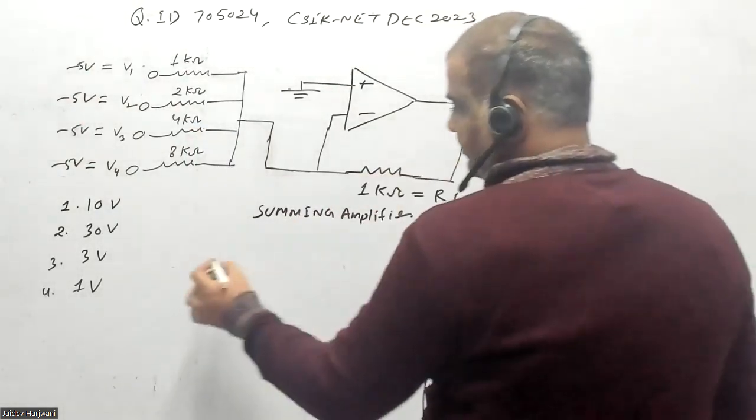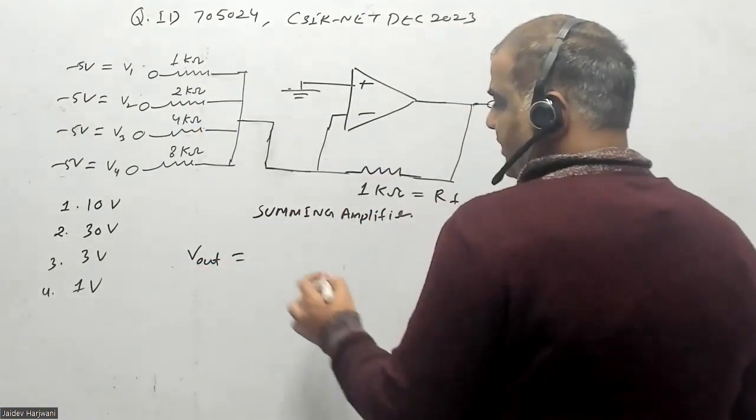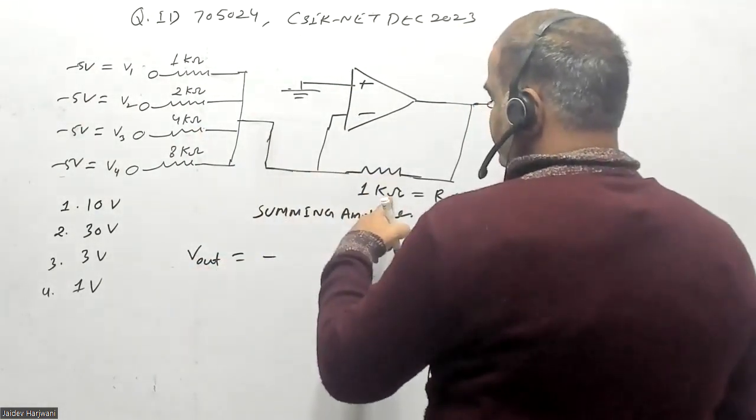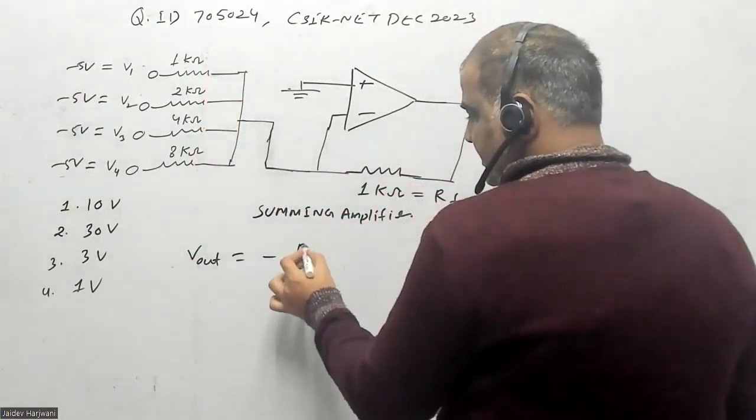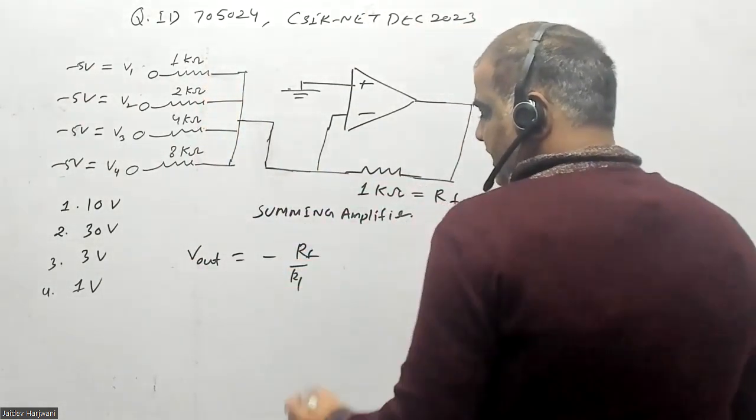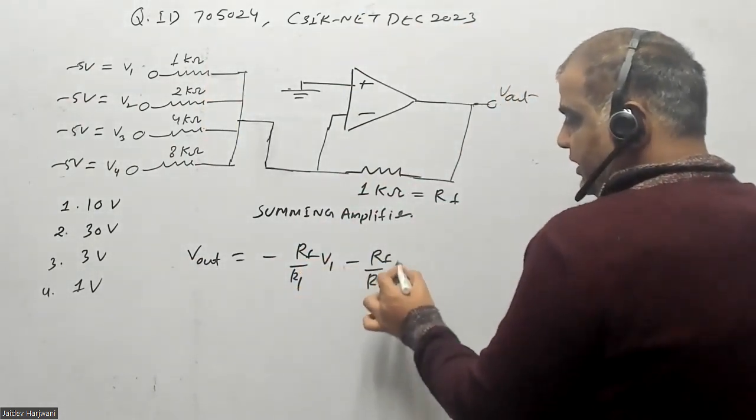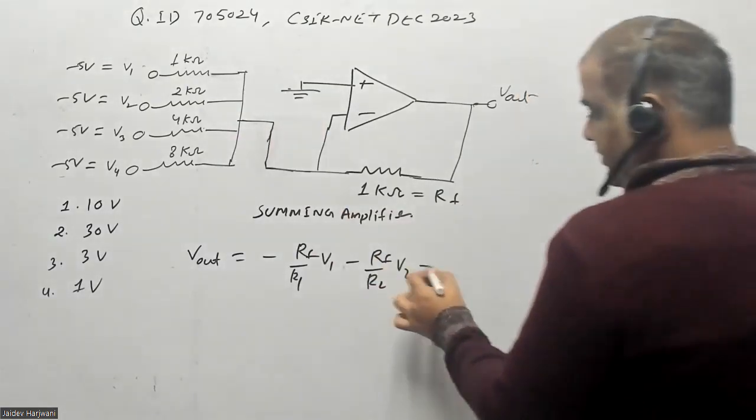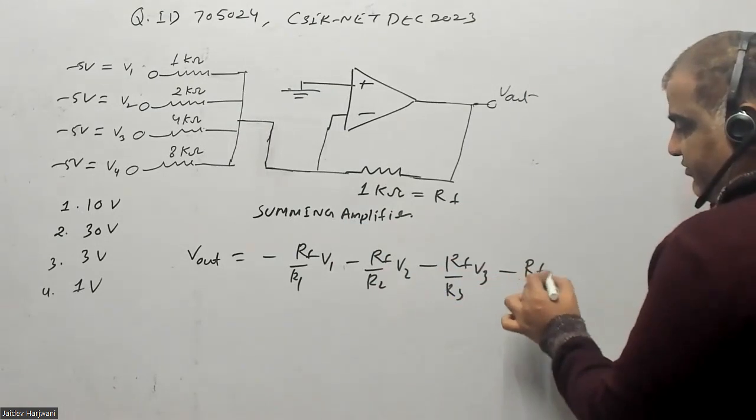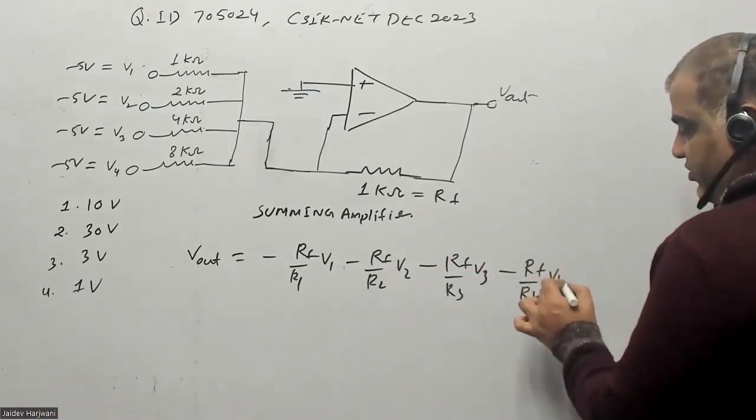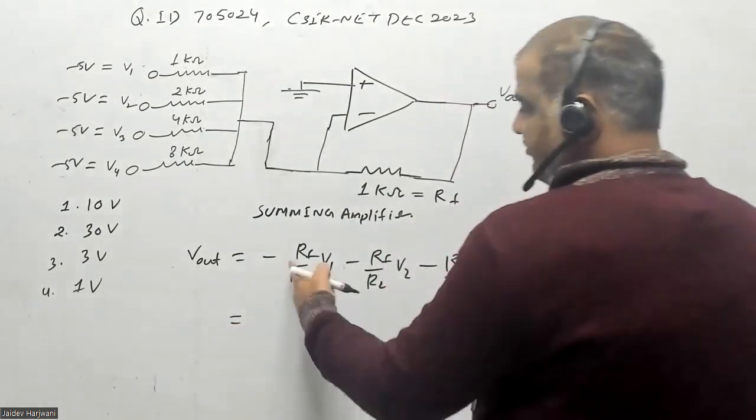So let's solve this problem. First of all we know V_out, the output will be minus R_F (this is 1 kilohm, R_F) upon R1 times V1, minus R_F upon R2 times V2, minus R_F upon R3 times V3, and minus R_F upon R4 times V4.